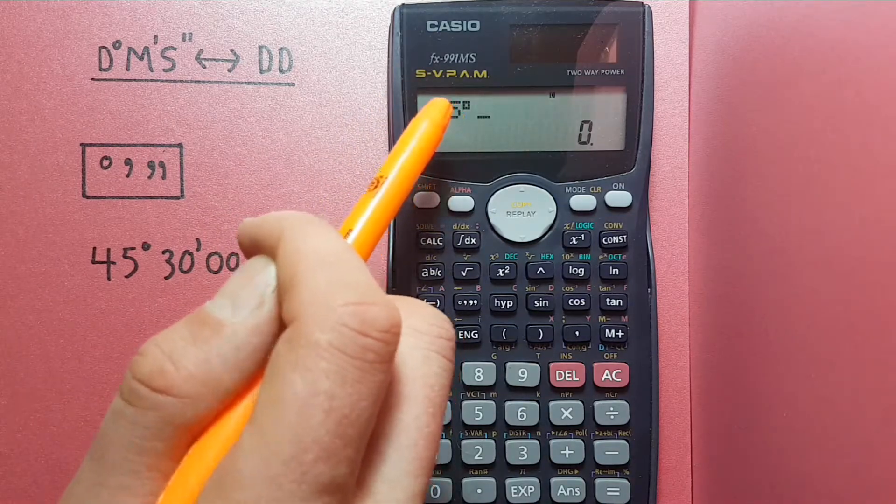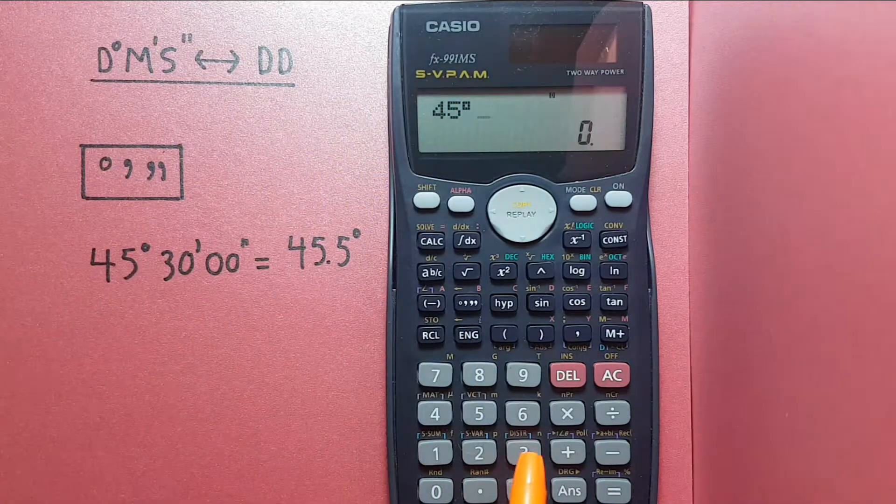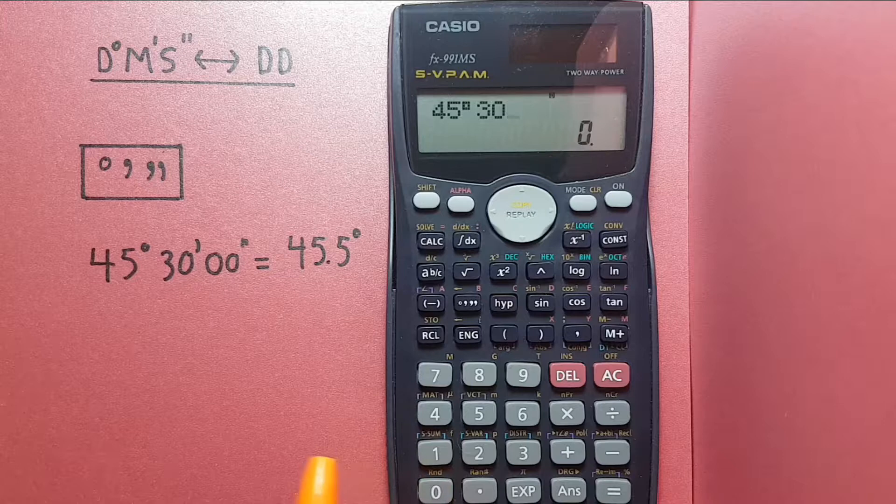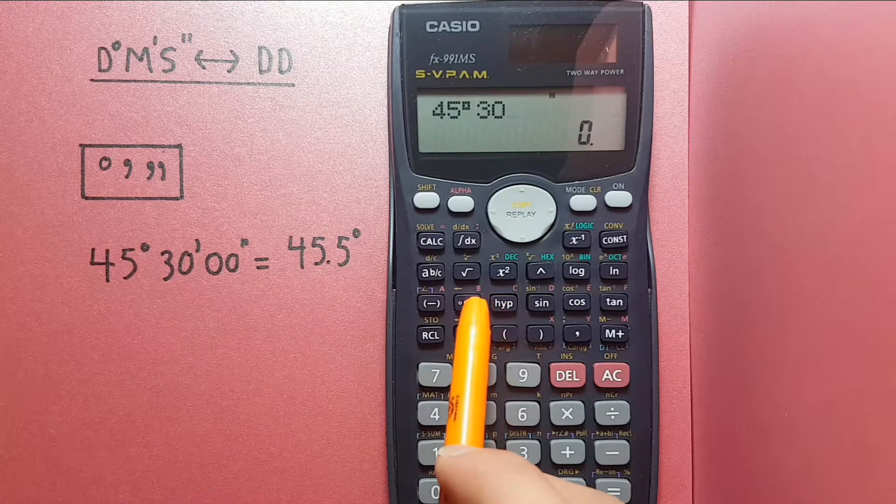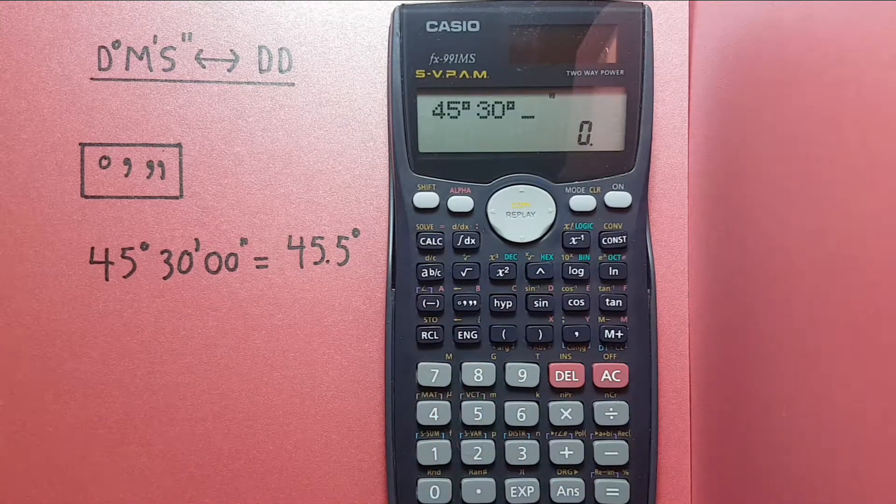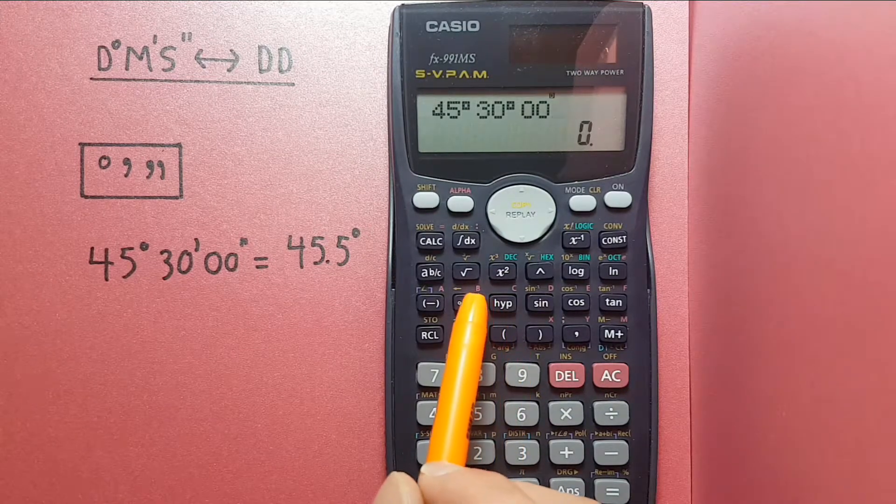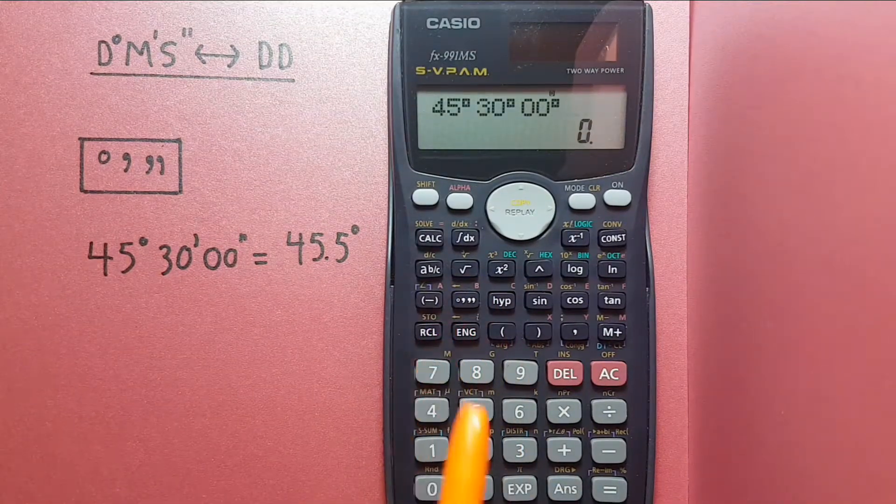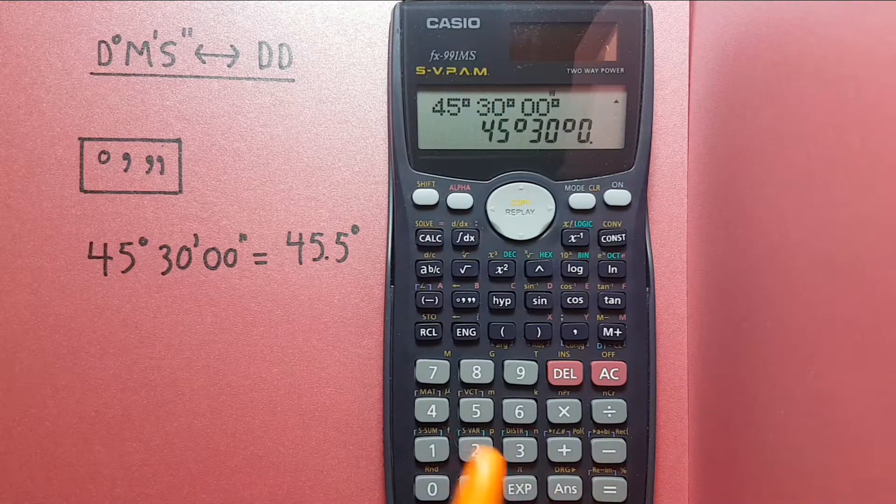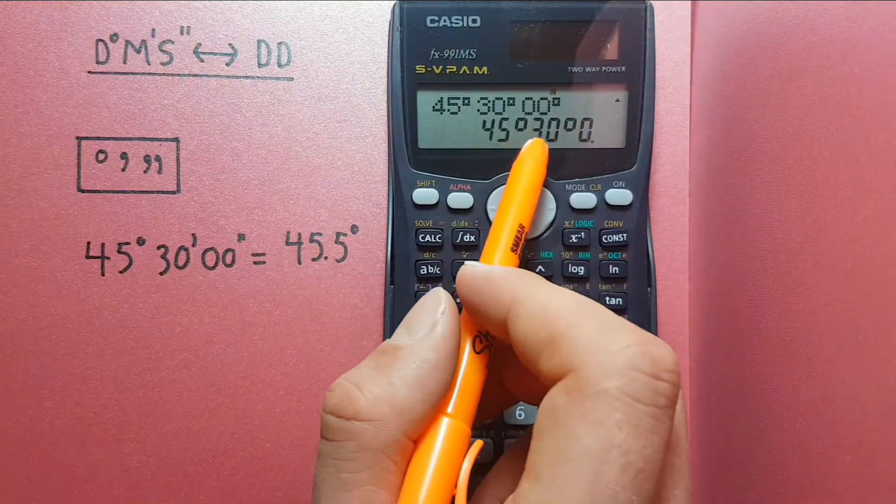We can see the degree symbol on the screen, and then 30 which are the minutes, again pressing the degree key, and then zero zero for our seconds and the degree key, and then hit equals to bring it to the lower screen.